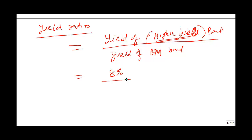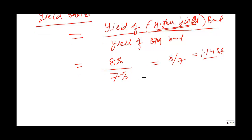The yield of the higher yield bond is 8% and the yield of the benchmark bond is 7%, so the yield ratio becomes 8 divided by 7 or 1.1428. Now, this yield ratio can be further simplified.